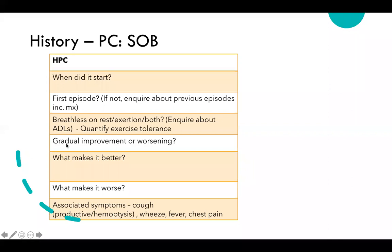Assess whether breathlessness is gradually improving or worsening, and what makes it better. People with respiratory conditions may use inhalers, nebulizers, or home oxygen. Also ask what makes it worse — apart from activities, is there anything else?